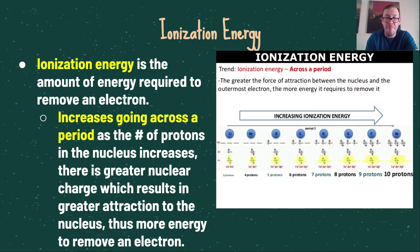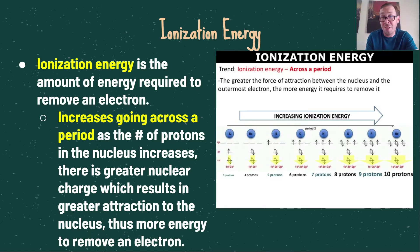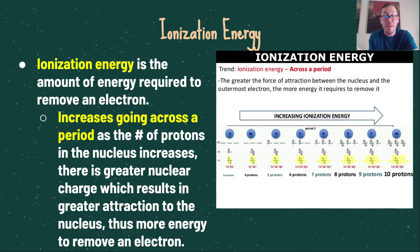As we go across the periodic table, ionization energy increases because the number of protons in the nucleus increases, resulting in greater nuclear charge. As we increase the number of protons, we increase the positive charge in the nucleus, creating a greater attraction of the outermost electrons to that positively charged nucleus. That greater attraction requires more energy to remove an electron. Going left to right in the second period, from lithium with 3 protons to neon with 10 protons, electrons are attracted more strongly to the greater nuclear charge, requiring more energy to remove them.